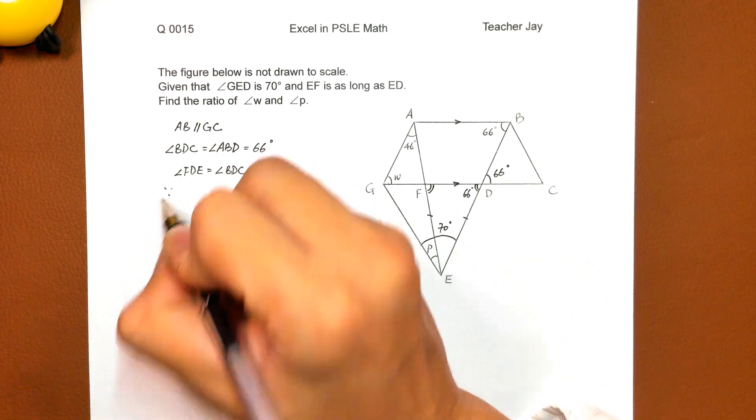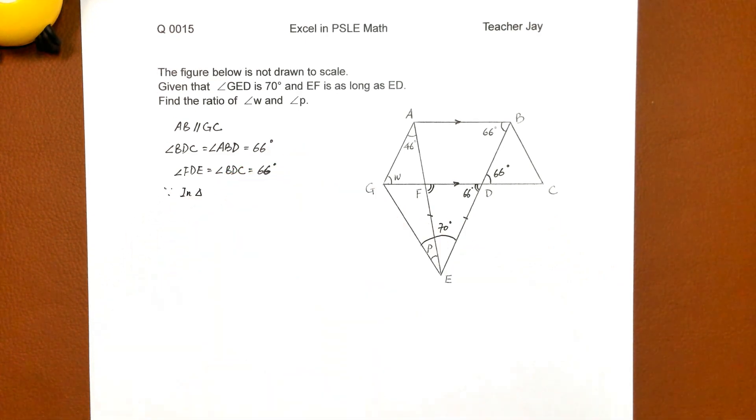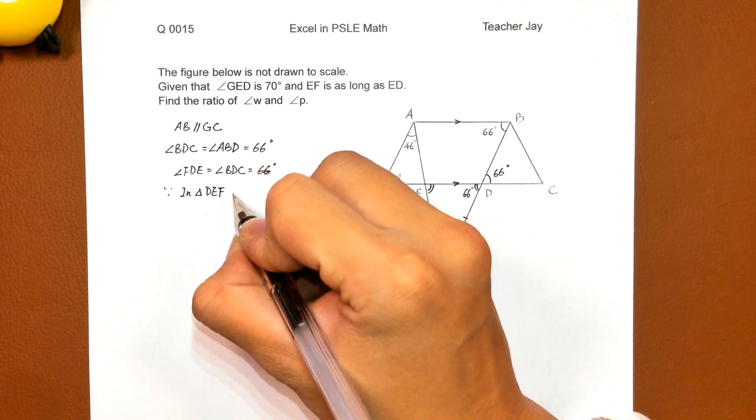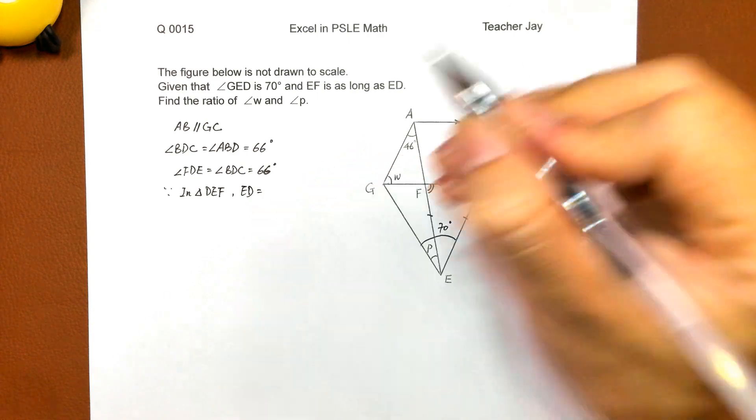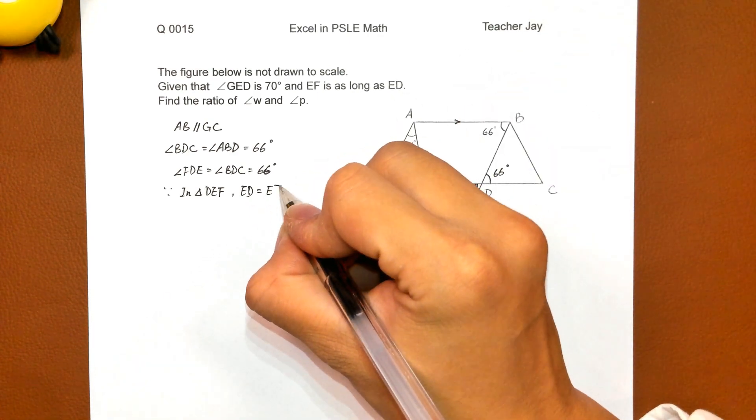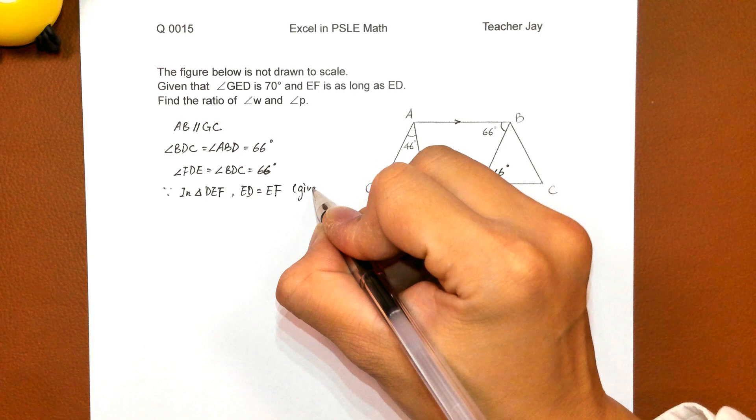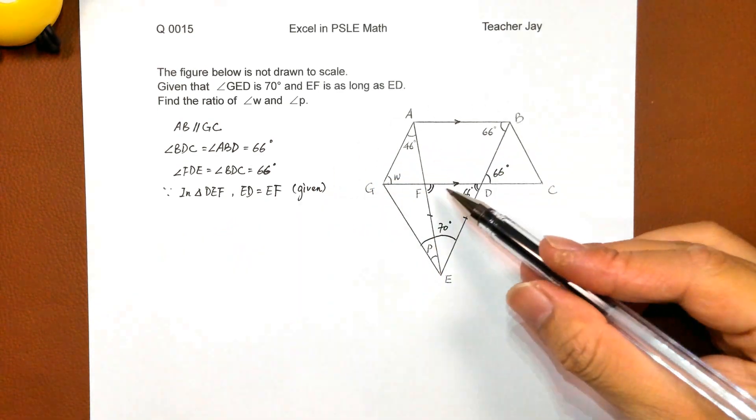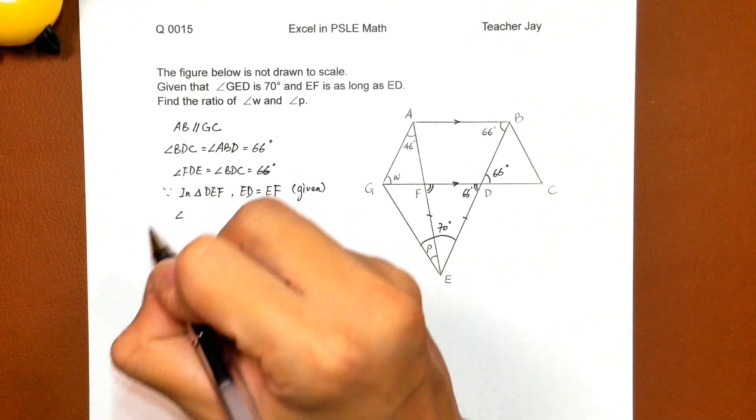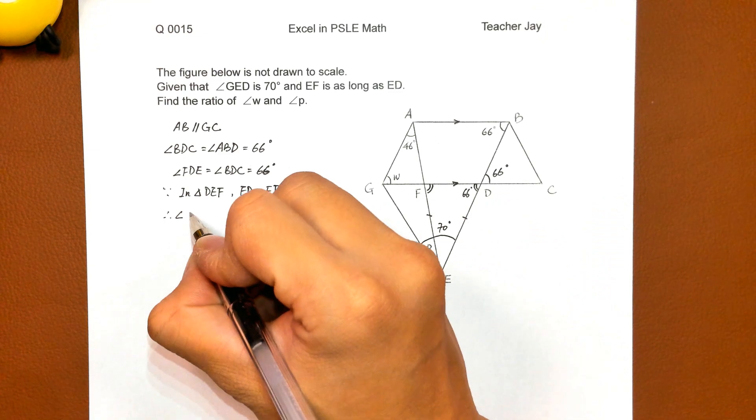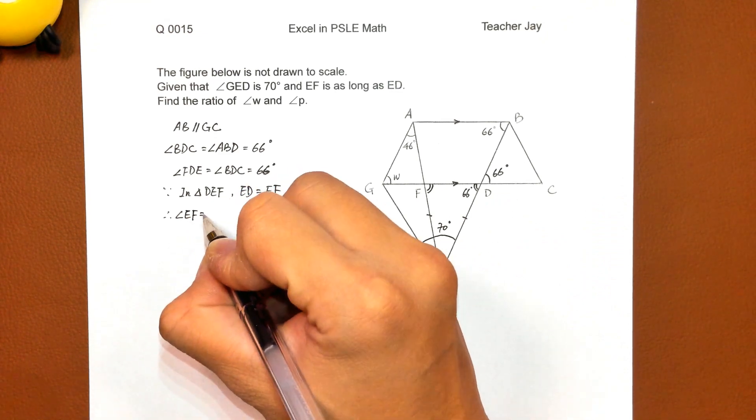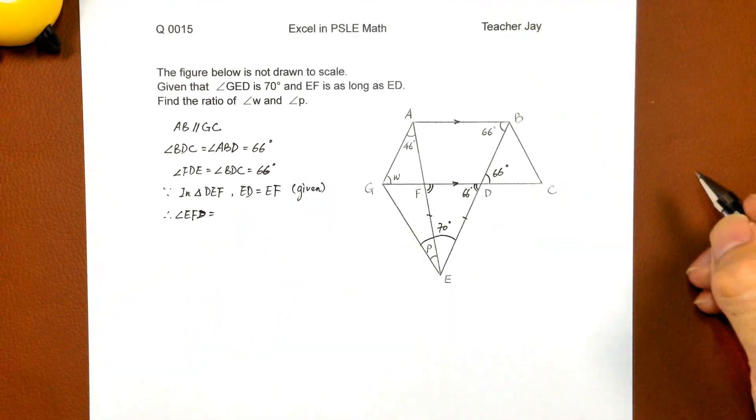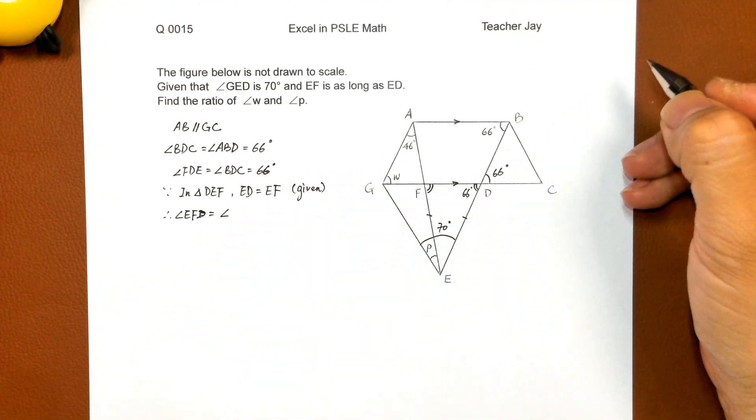And since in triangle DEF, ED equals EF, we have an isosceles triangle. So angle EFD equals angle EDF.